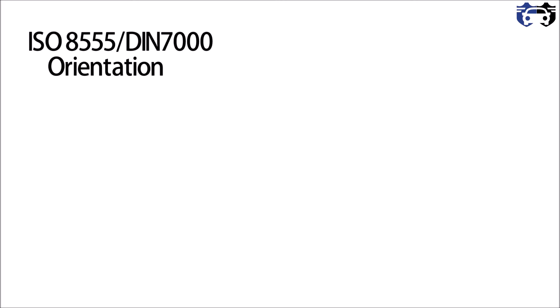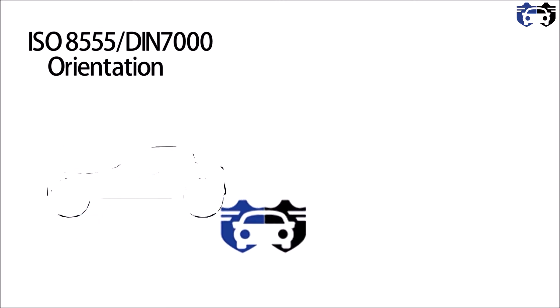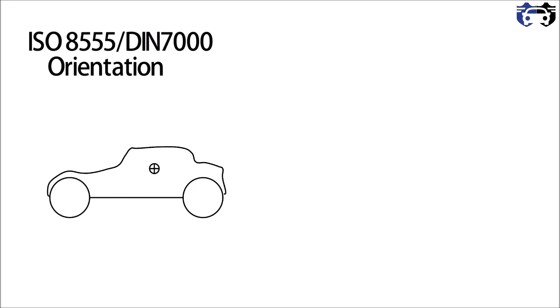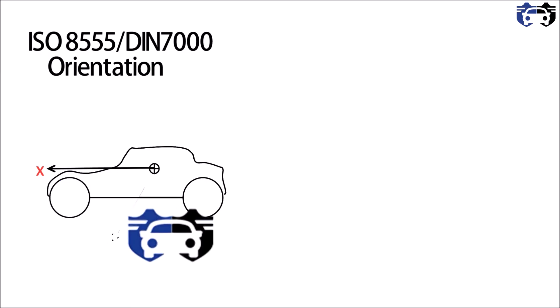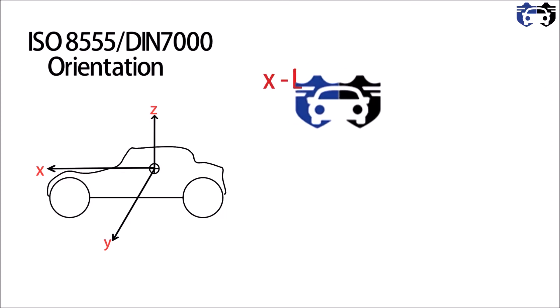First we are going to see the orientation of the car — that is, how the car is placed. This orientation is the ISO orientation, which is used for vehicle dynamics. Here is the car. This is the CG location. The front horizontal one is called x, the perpendicular one is called y, and the vertical one is called z. These are all the positive directions.